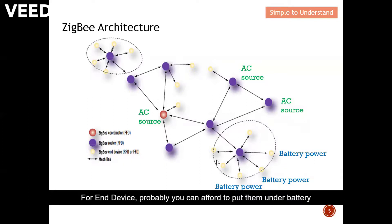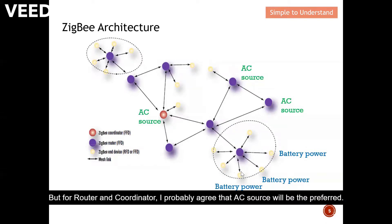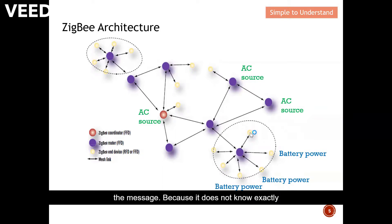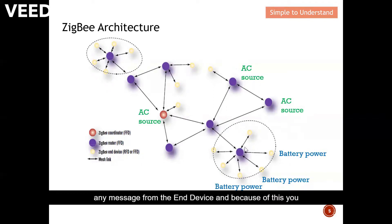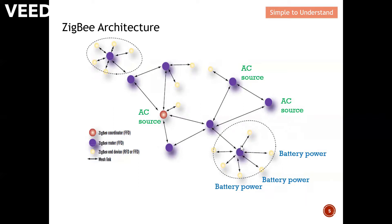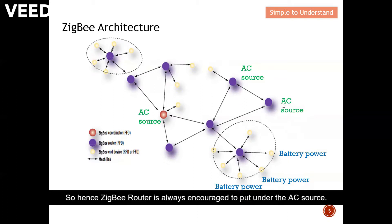For end devices, you can probably afford to run them on battery because end devices are optimized for low power. However, for routers and coordinators, an AC power source is preferred. The reason is that the router does not know exactly when the end device will send a message, so it cannot go to sleep — it must be awake 24/7 to listen for any message from end devices. Because of this, you cannot afford to put the router on battery, as it would need to be replaced frequently. Hence ZigBee routers are always encouraged to use an AC source.